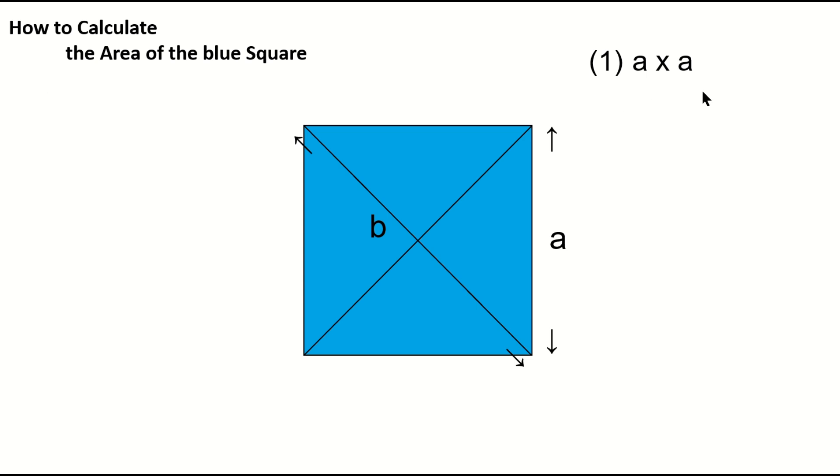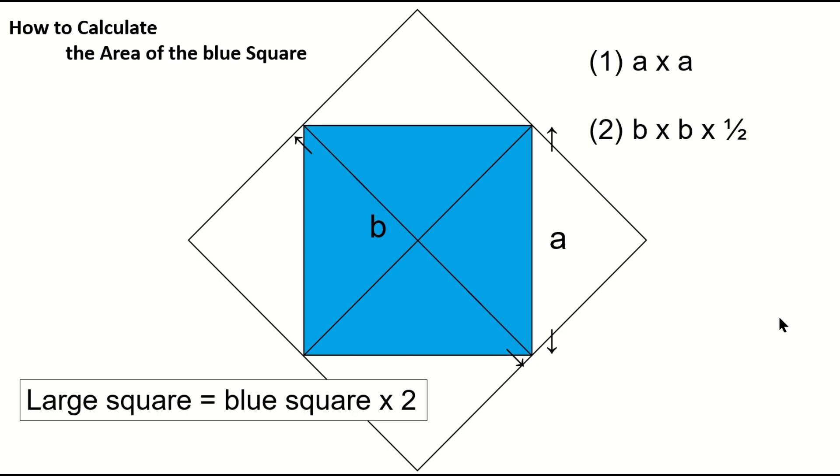The other is, the square of the length of the diagonal multiplied by half. Let me explain what this means. Draw another square outside the blue square. This blue isosceles right triangle, and this white isosceles right triangle are congruent. Therefore, the area of the larger square is twice the area of the blue square, or B times B.